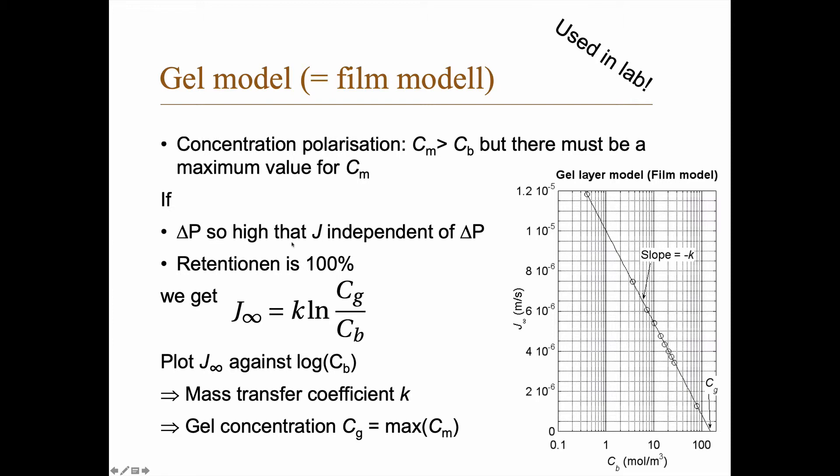So if the transmembrane pressure delta P is so high that the flux becomes independent of delta P and retention is 100%, we get this equation: J_∞ equals the mass transfer coefficient times the natural logarithm of C_g divided by C_b, where C_g is this maximum concentration. We can plot J_∞ against the logarithm of C_b and you get as the slope the mass transfer coefficient, and you get the gel concentration as the maximum membrane concentration near the membrane.